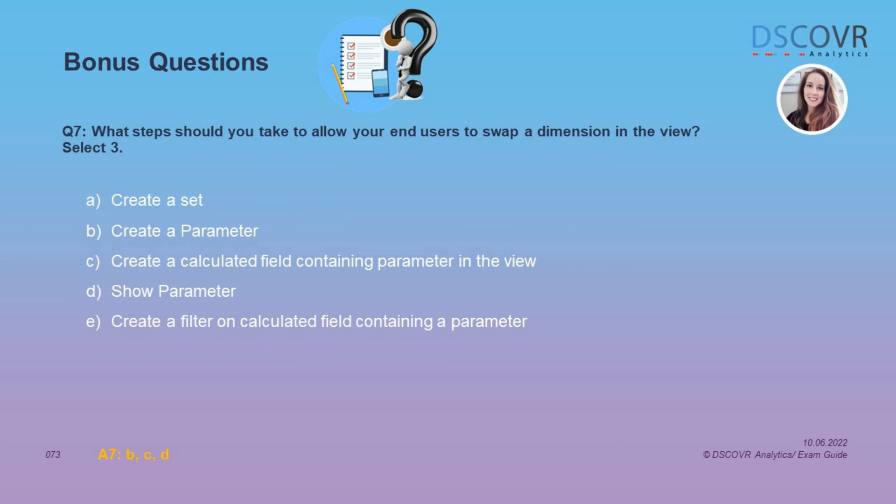For question number 7, we need to specify the steps to allow end users to swap a dimension in the view. The answers are B, C, and D. First, we need to create a parameter. We also need to show the parameter control, and then link the parameter control to our visualization using a calculated field.